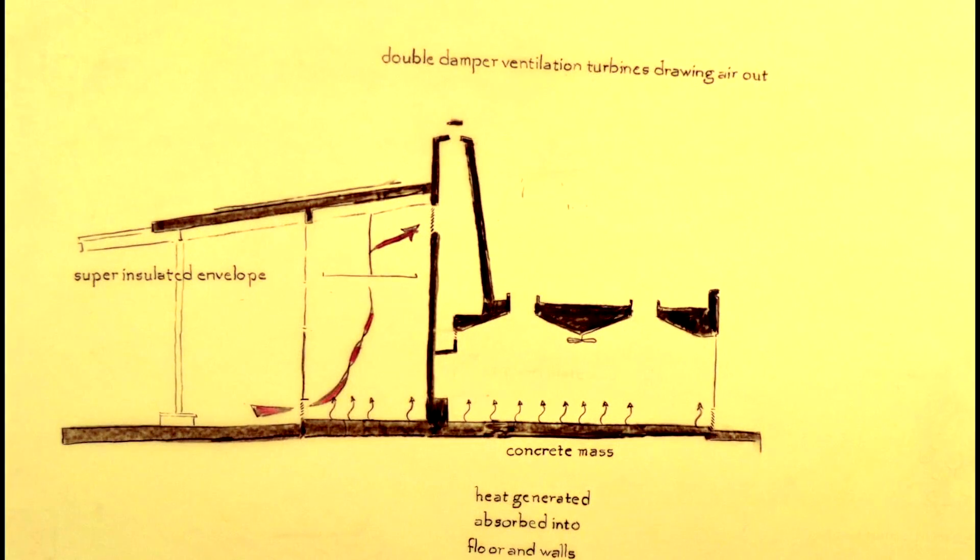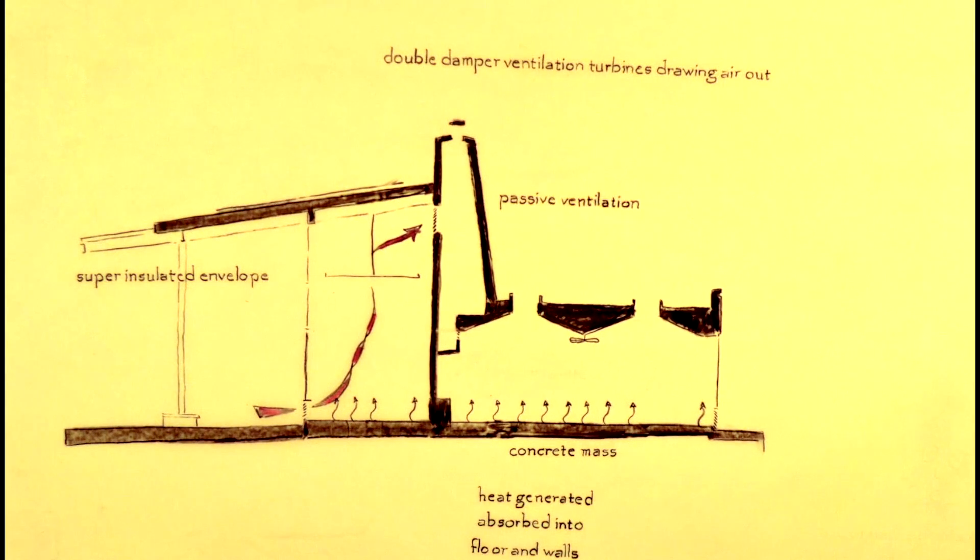A natural ventilation system includes a night-flush cool-down process that allows cool air in, aided by wind-powered turbines that draw warm air up and out through the ventilation stacks.